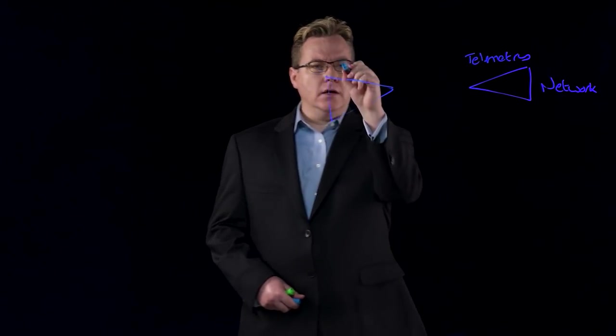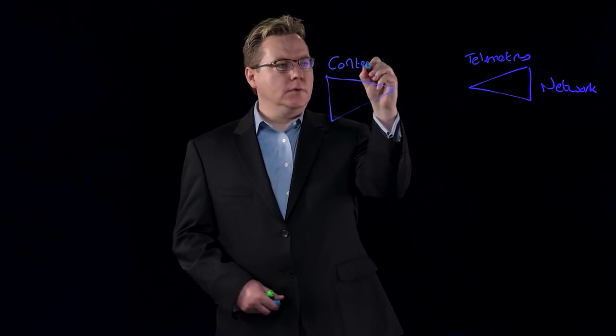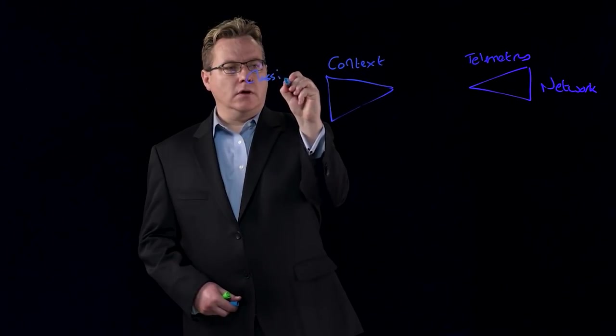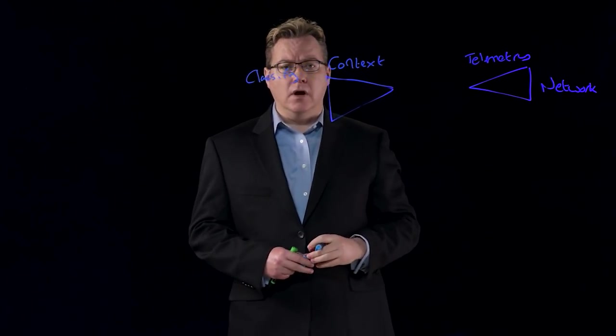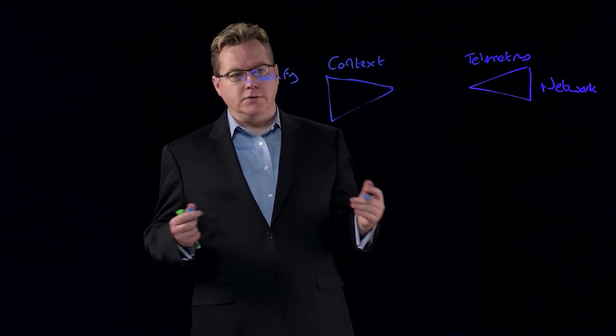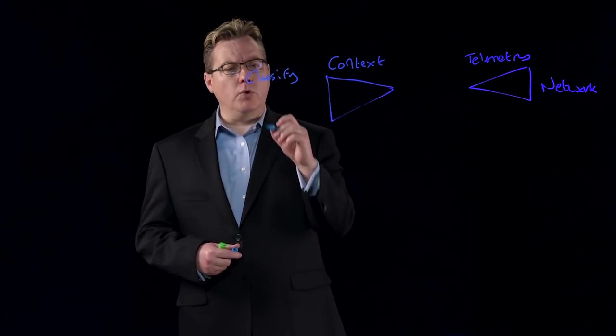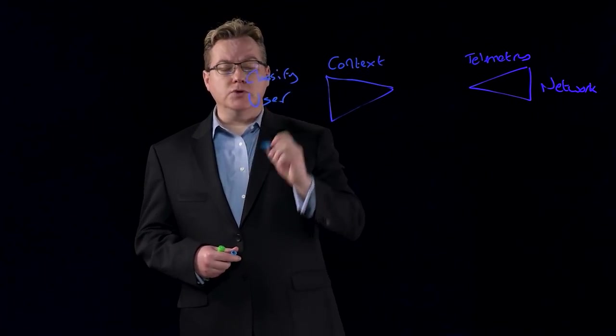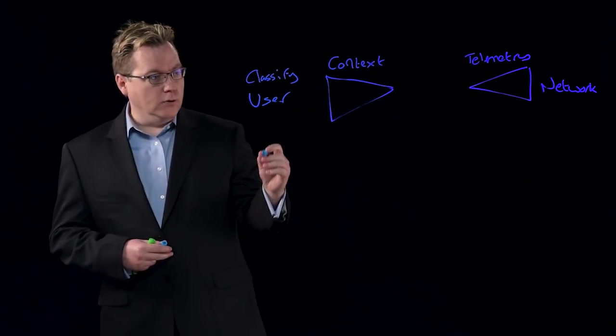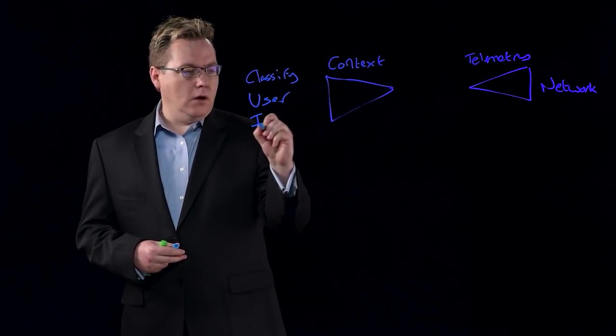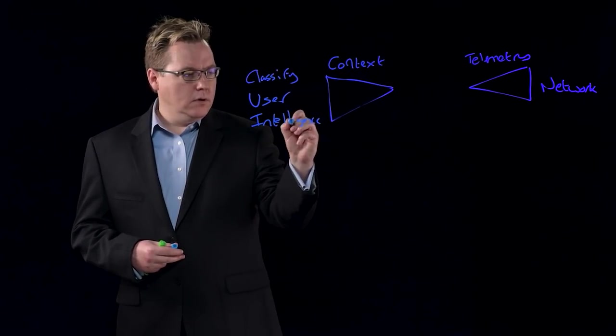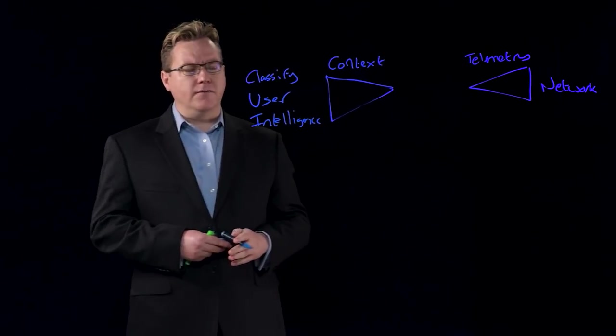And this context can take various forms. We might want to know what is this, so some idea of the classification of this device. Is it a DNS server? Is it a host? Is it a SQL server? We might want to know something around who's on the device, who is the user. And we also might want to know some idea of what's happening in other locations. So what do we know from our intelligence sources? Have we seen this kind of behavior before?